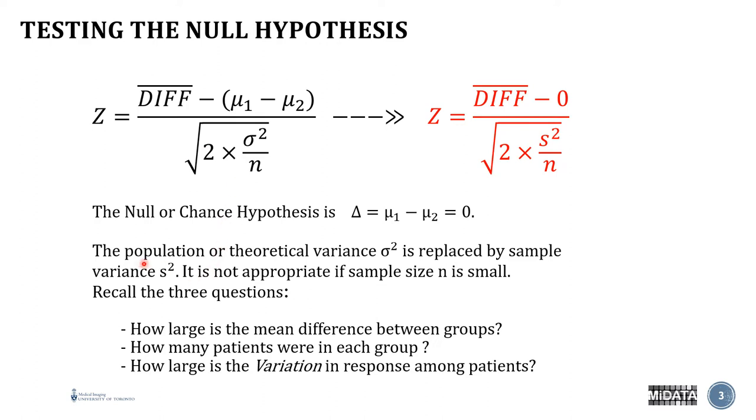Because we don't know the population or theoretical variance of the difference, we need to replace it by the sample variance. And this is why when you ask how many patients were in their group, it's going to have an effect because the larger your sample, the more this term will be minimized, which is a good thing. It's reducing your noise.